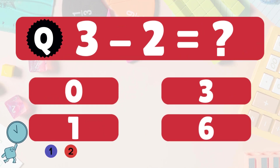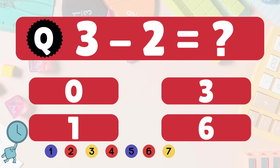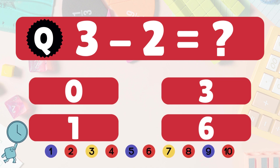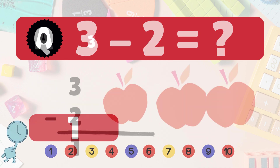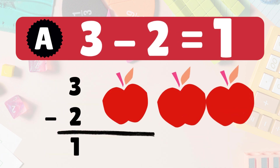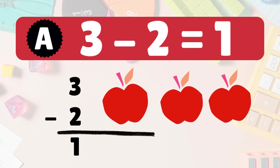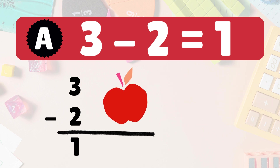3 minus 2 equals what? 3 minus 2 is 1. Here we have 3 apples. Take 2 away. 1 apple left: 1. So 3 minus 2 is 1. Great job!